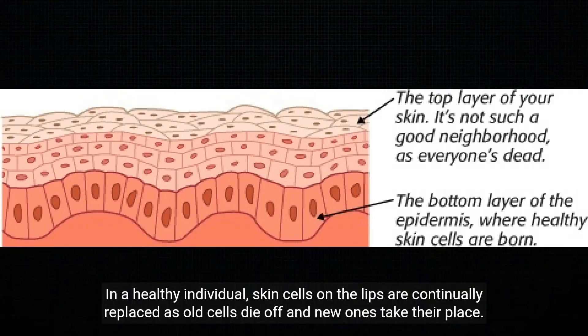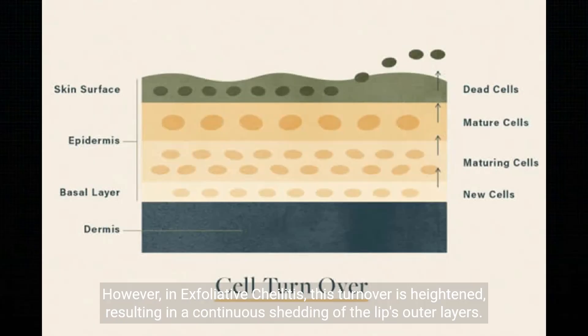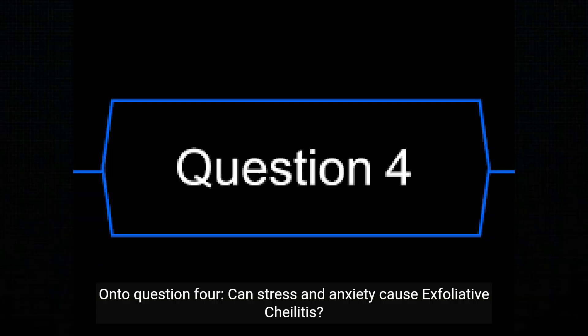In a healthy individual, skin cells on the lips are continually replaced as old cells die off and new ones take their place. However, in exfoliative cheilitis, this turnover is heightened, resulting in a continuous shedding of the lips' outer layers.